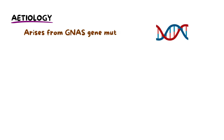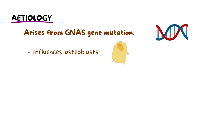Fibrous dysplasia arises from a mutation in the GNAS gene, which encodes a protein that regulates many other genes. The mutation influences the osteoblasts, which are the bone forming cells, resulting in an excessive production of fibrous tissue.